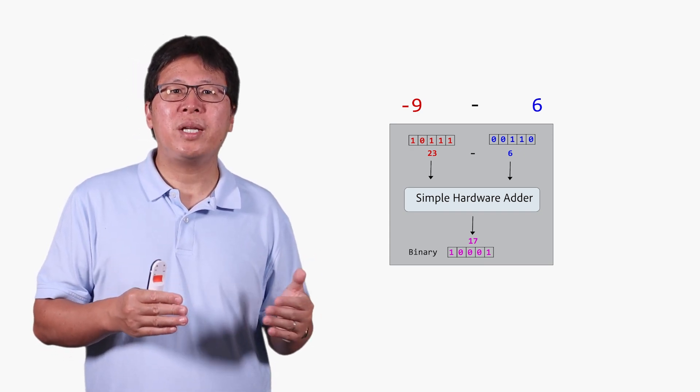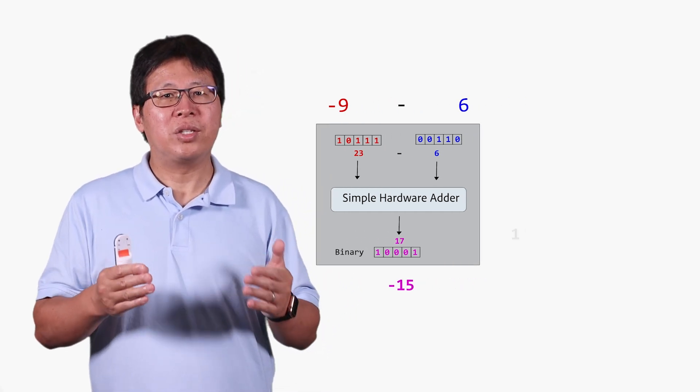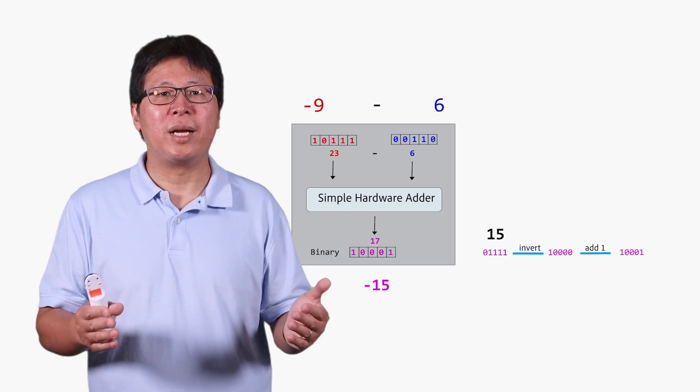If the result represents a signed integer in two's complement, the result is negative 15. This is exactly the result of subtracting the original signed integers.